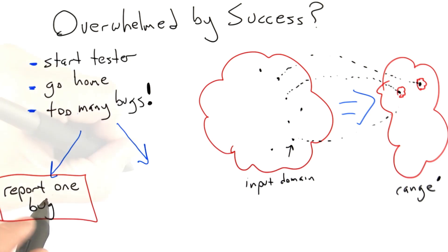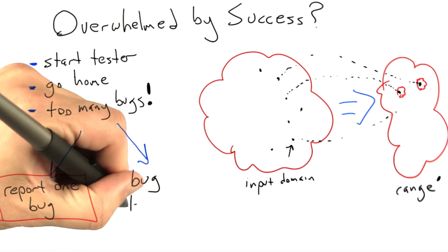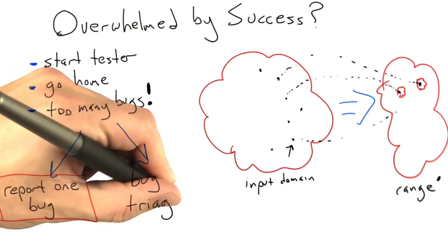So if that's the situation, if reporting one bug at a time doesn't work, we're forced to use a different strategy, and I call that bug triage.